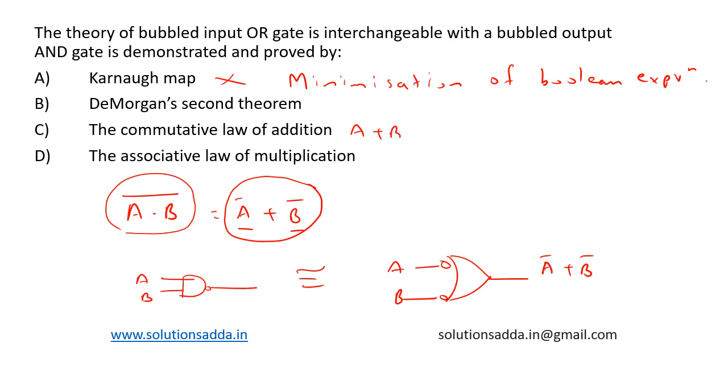Multiplication says that A plus B is same as B plus A, and the associative law of multiplication says that A into B into C is equal to A into B into C. So among the options, option B, De Morgan's second theorem, is the correct answer.